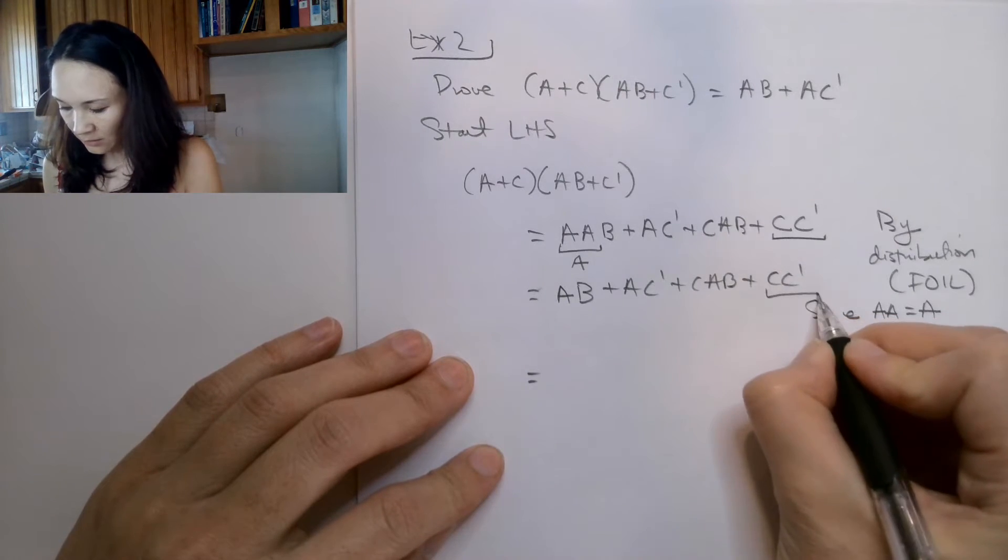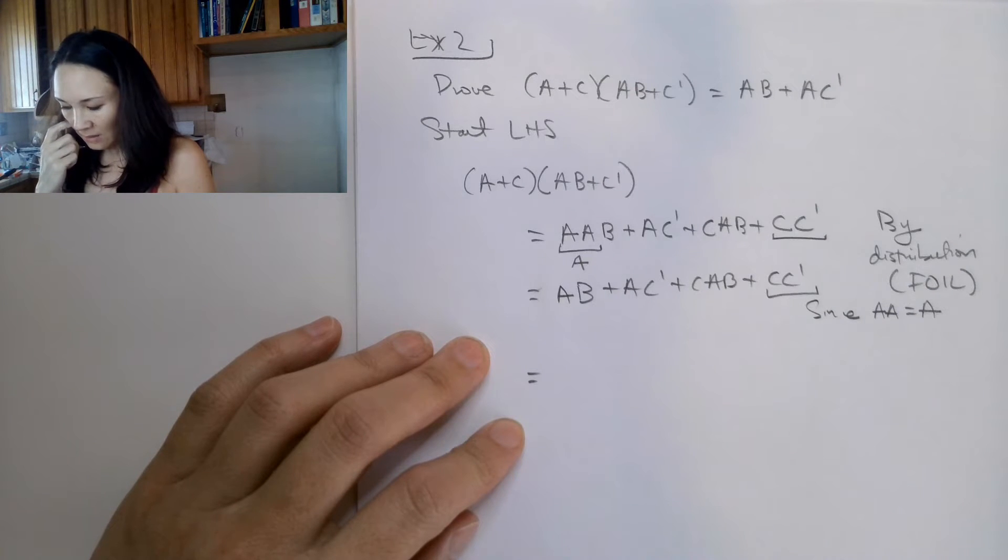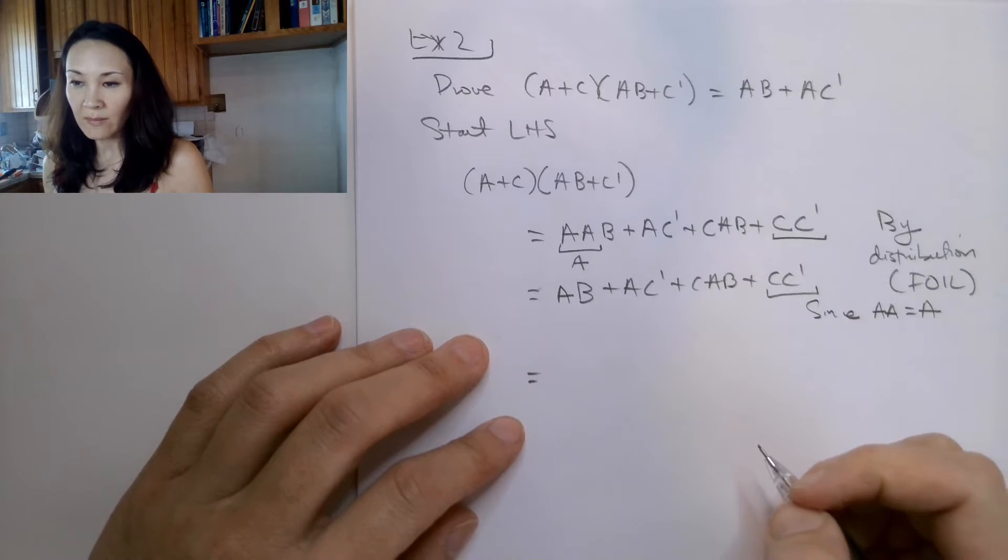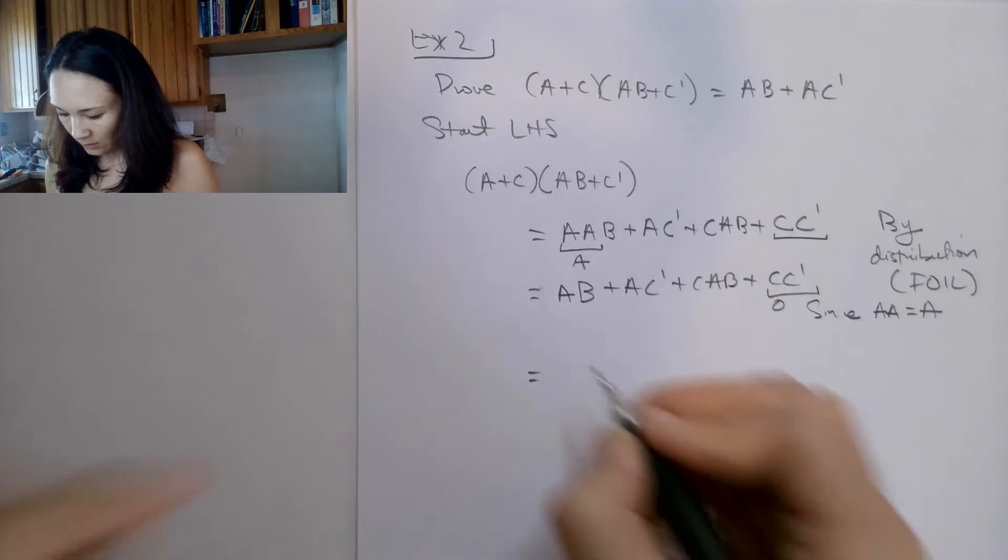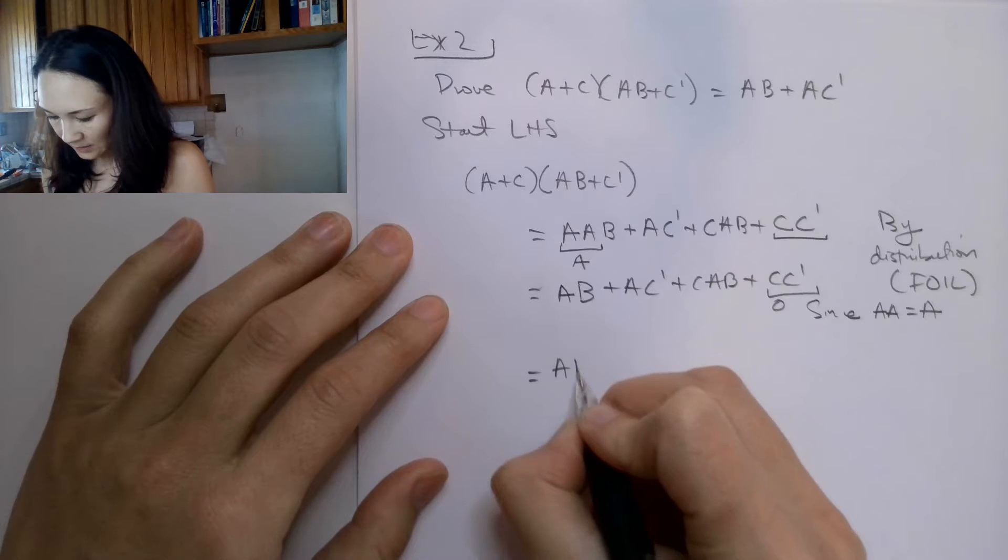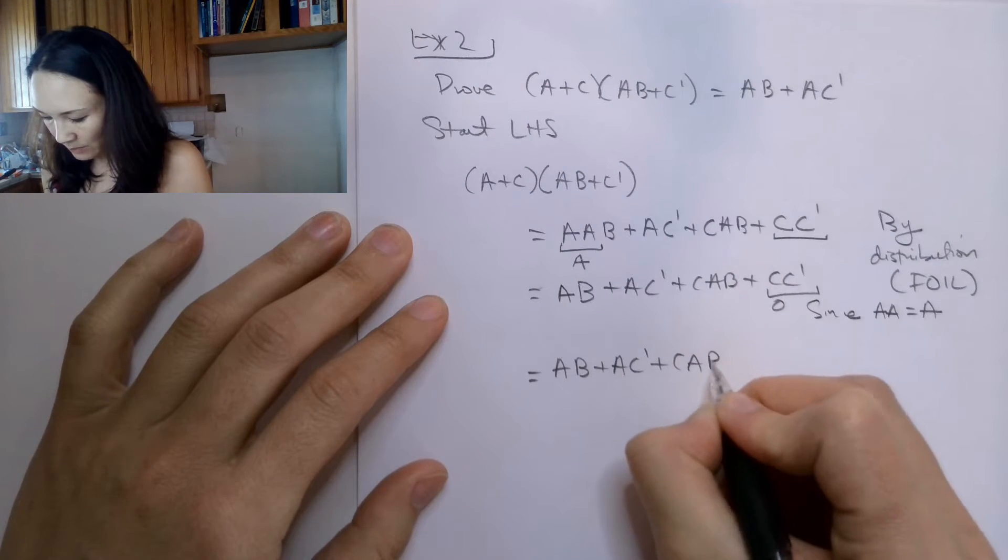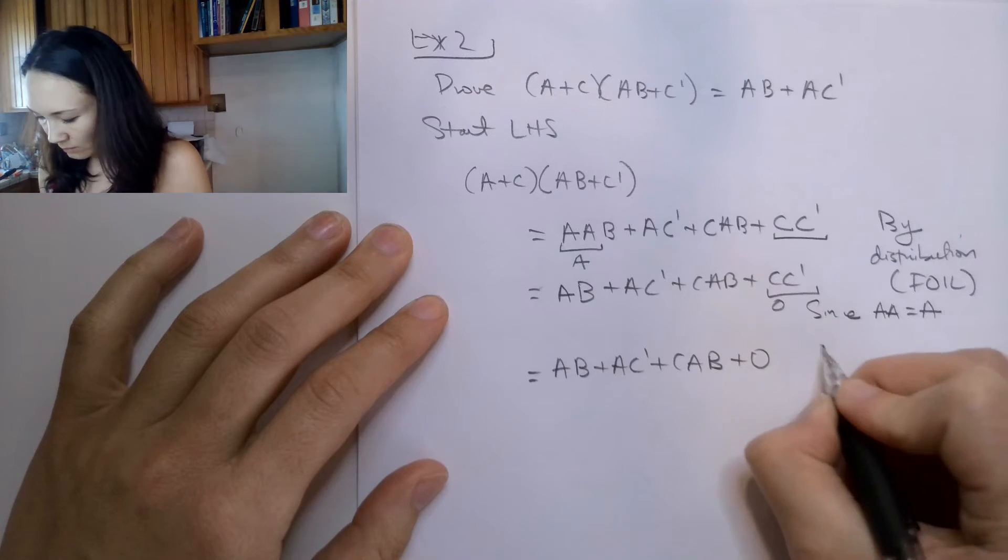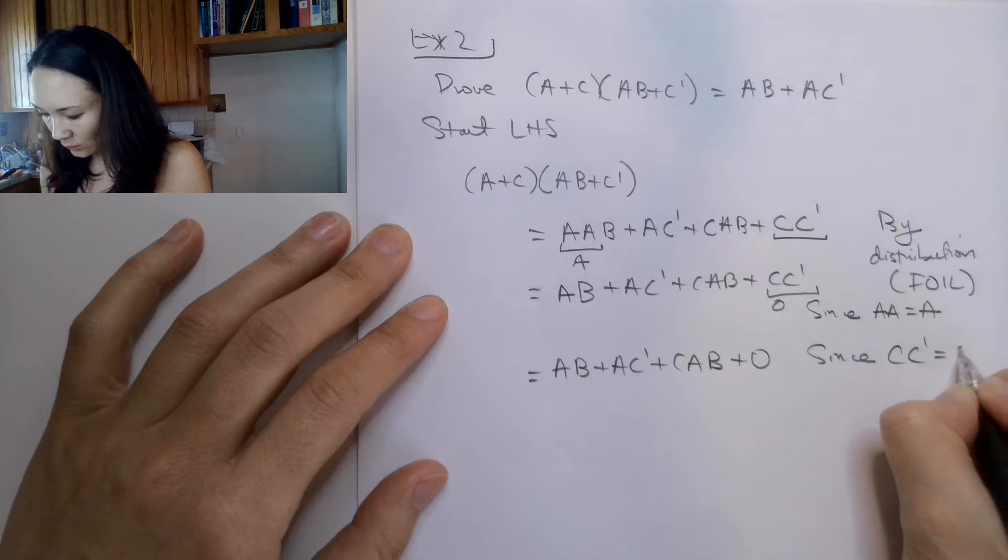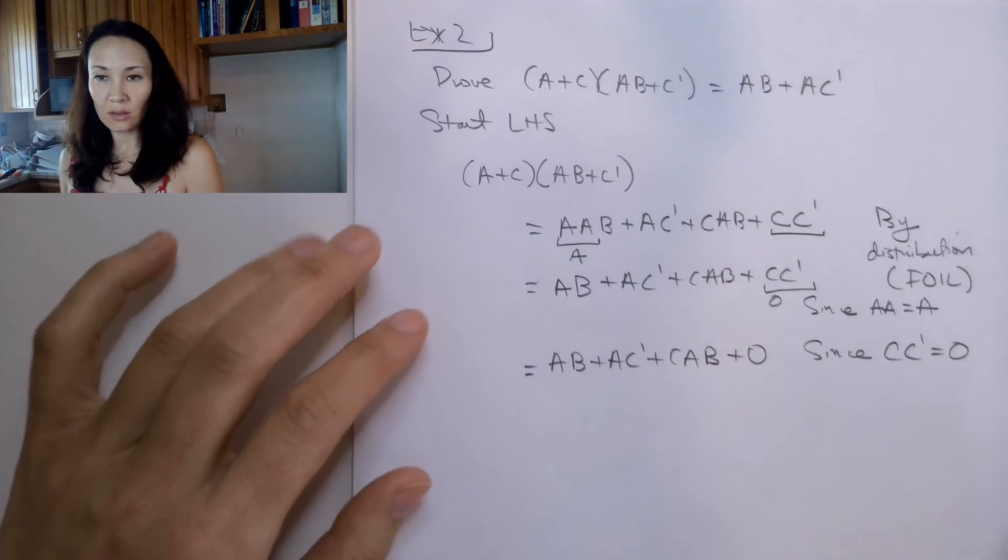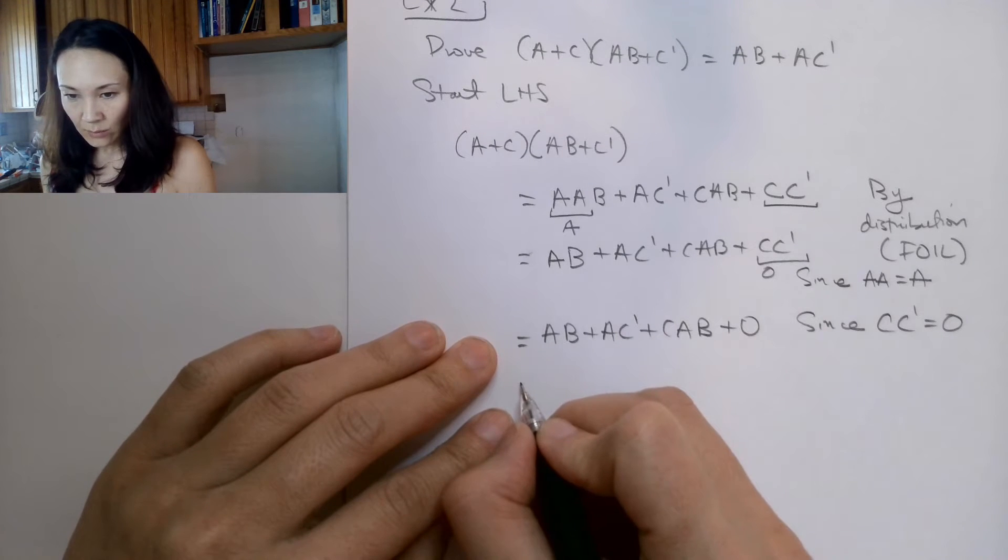Now I'm going to handle this thing here. Anytime you and something with its complement, you're going to get zero. So if this thing is equivalent to zero, then my equation becomes A, B or A, C naught or C, A, B plus zero. My justification is since C, C naught is equal to zero. That comes from another fundamental law of Boolean algebra.